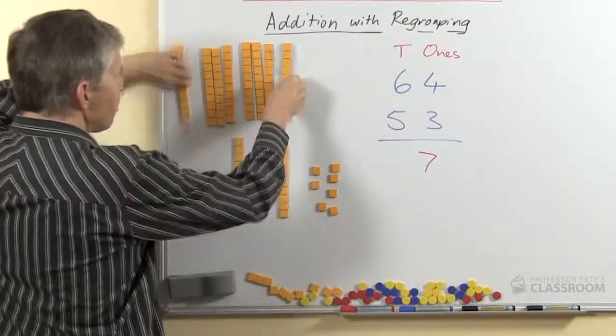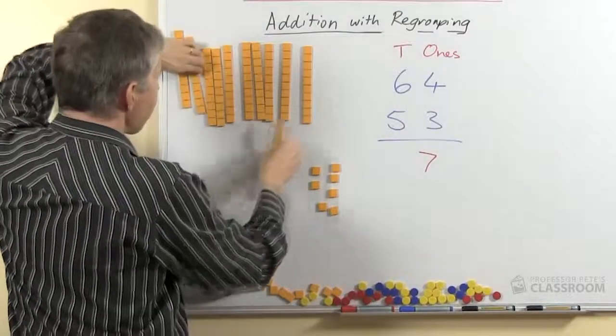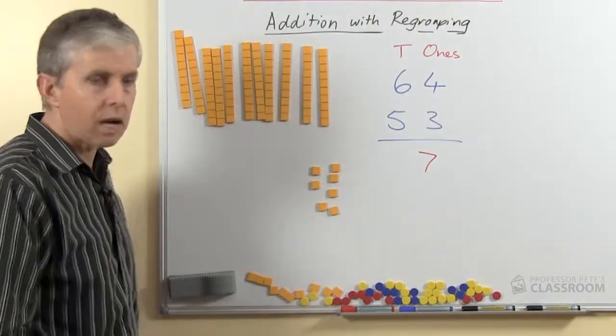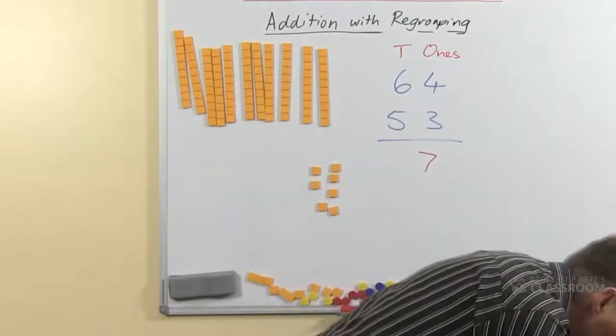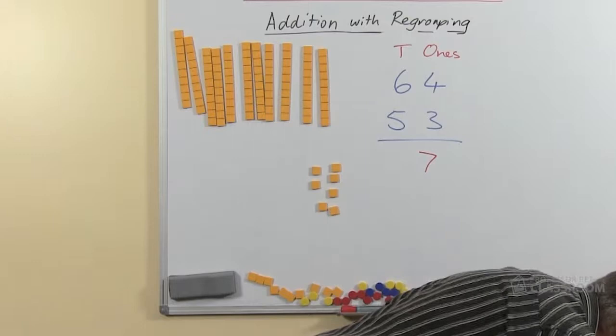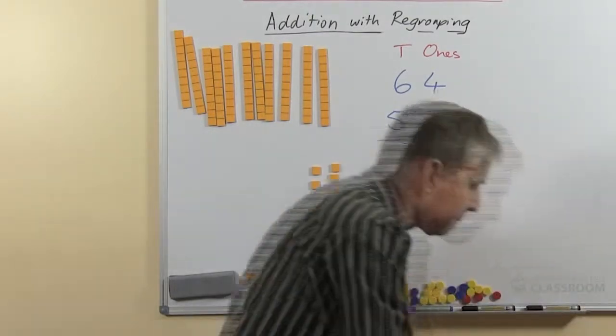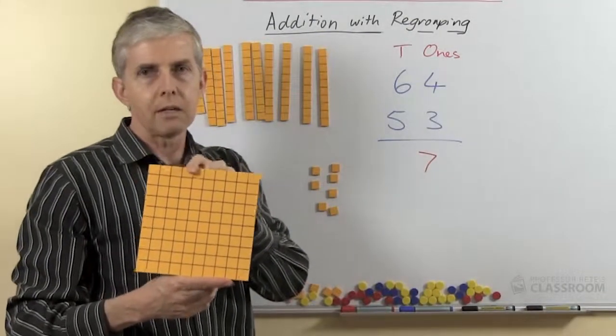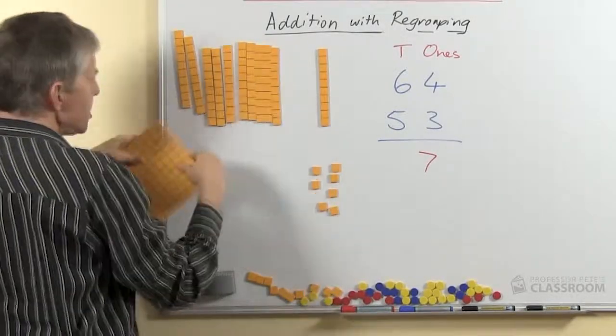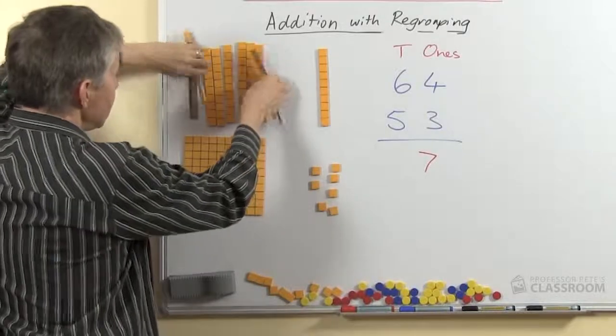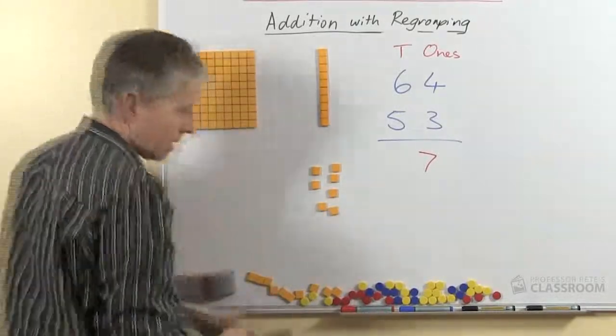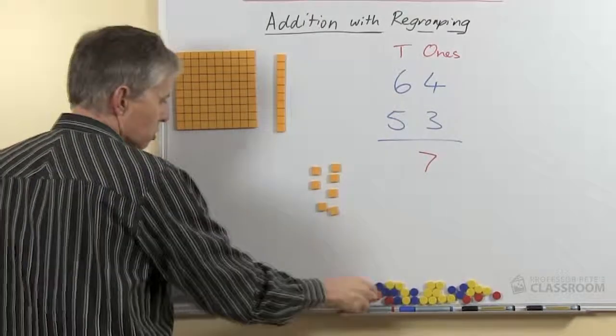So if we have 11 tens, the question we have to ask is, is that enough to make 100? And of course it is, because you will know, if I can find 100 in my box, here we go. 100 like this is made of 10 tens and we have 11 tens. I'm going to take 10 of these off, these magnetic ones, and there's my 100 and I have one more.